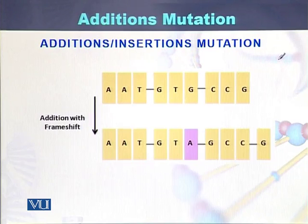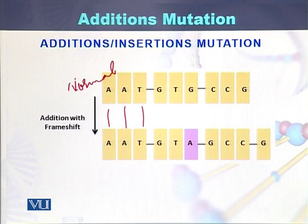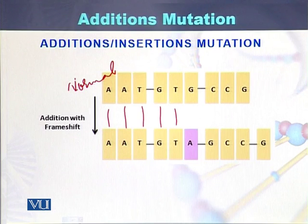In this diagram, we can see how a nucleotide is added into the sequence of the DNA. If we do the comparison, this is the normal DNA sequence. In the normal DNA sequence, there is A, A, T, G, T, and then there is addition of a nucleotide A. This G is actually this one, so between T and G, a new nucleotide has been added — that is adenine.